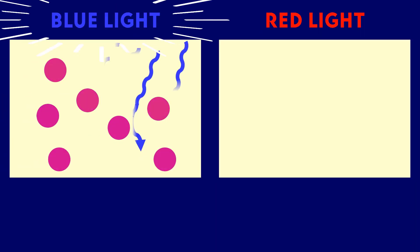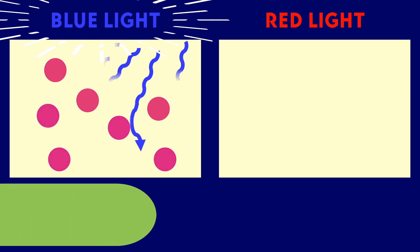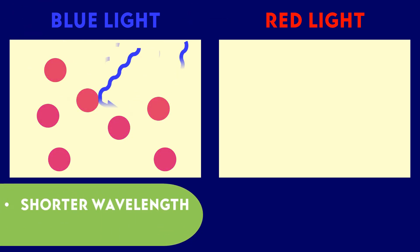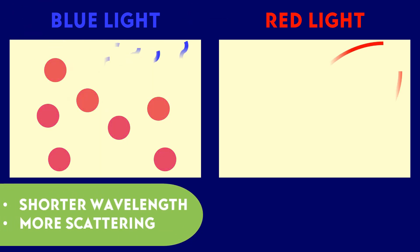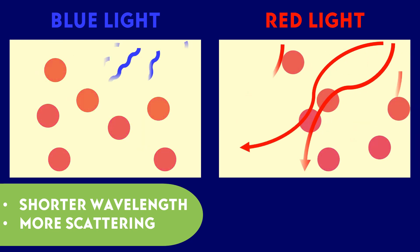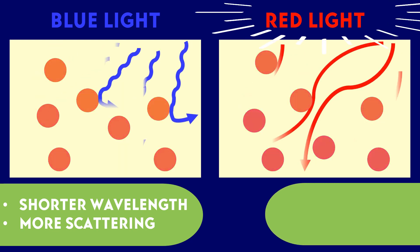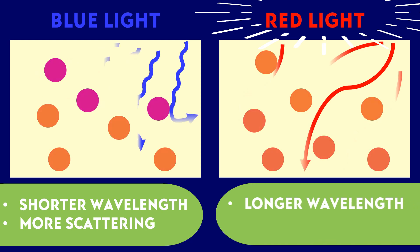Blue light with shorter wavelength scatters the most in all directions. Meanwhile, red light with longer wavelength is less scattered.